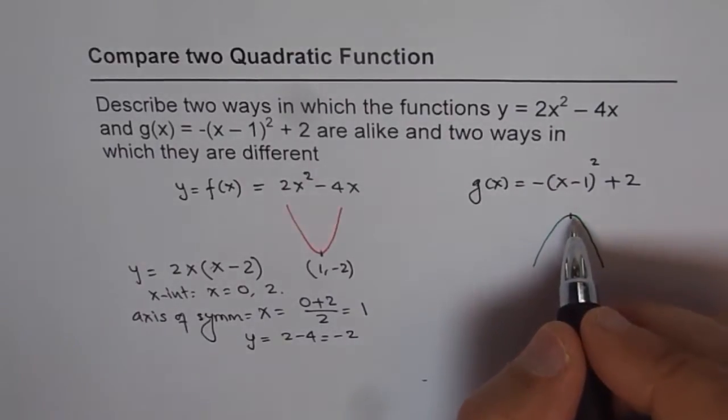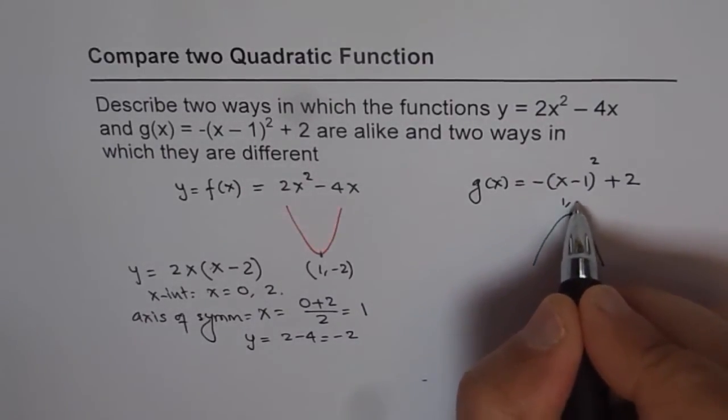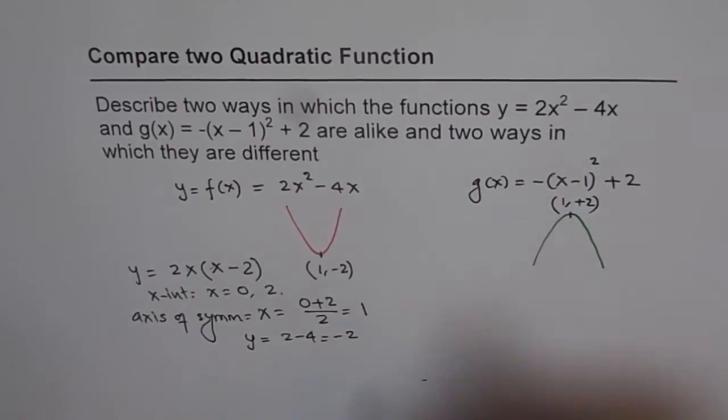In this case, the vertex is at (1, 2). Do you see that? Now we've got these parabolas and we have to write similarities and differences between the two. Now you can write so many similarities and differences.